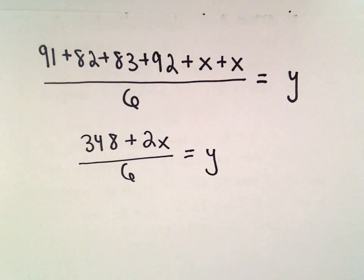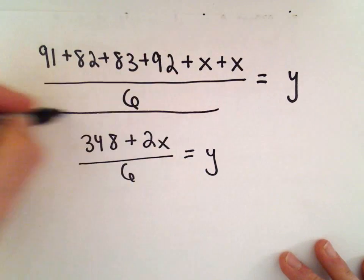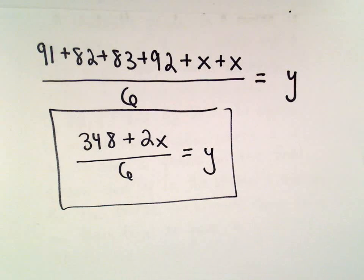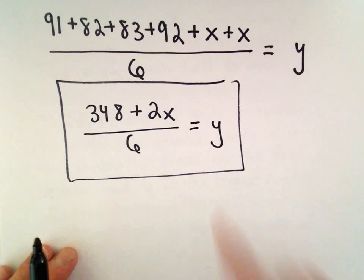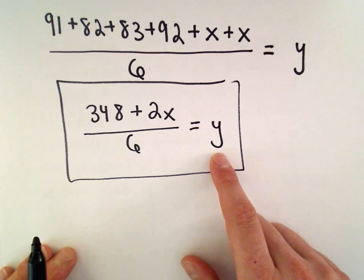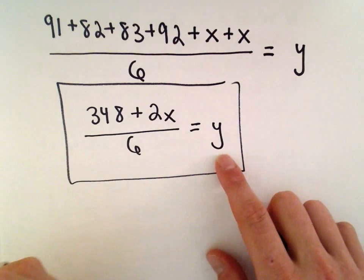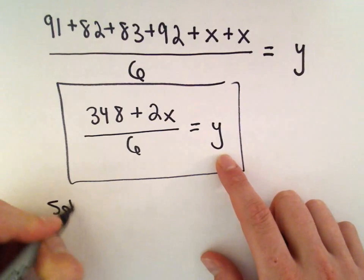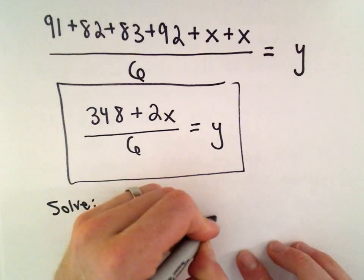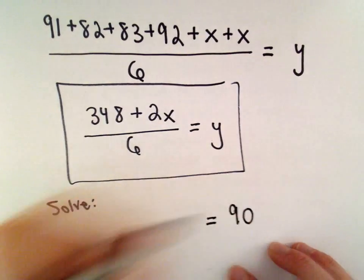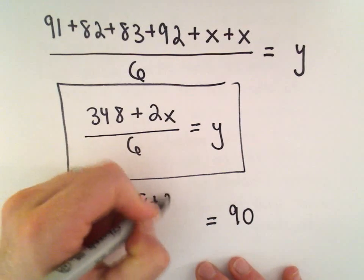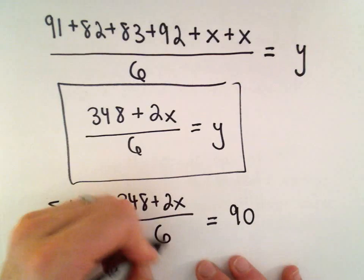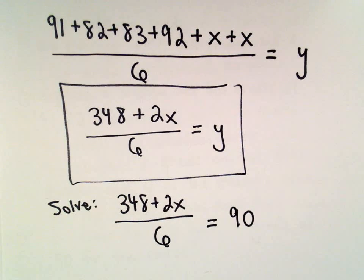If we want our desired final grade to be a 90, that means we want the average to be a 90, so we'll have to solve the equation. We'll plug the 90 on the right side, and then we have 348 plus 2x divided by 6 equals 90, and we'll just have to solve this equation.